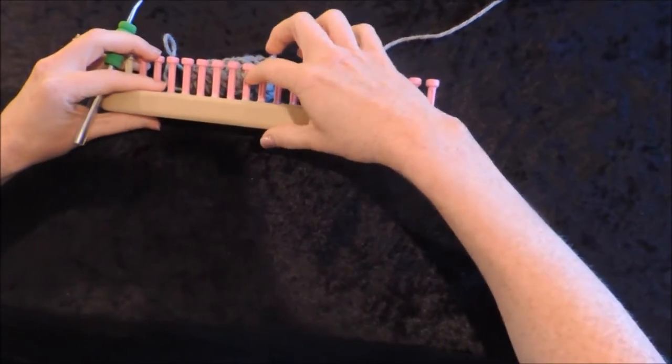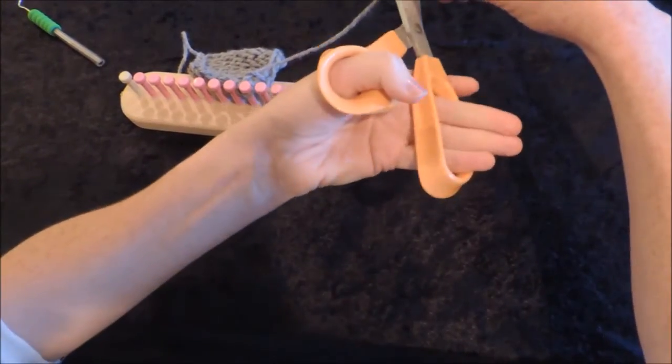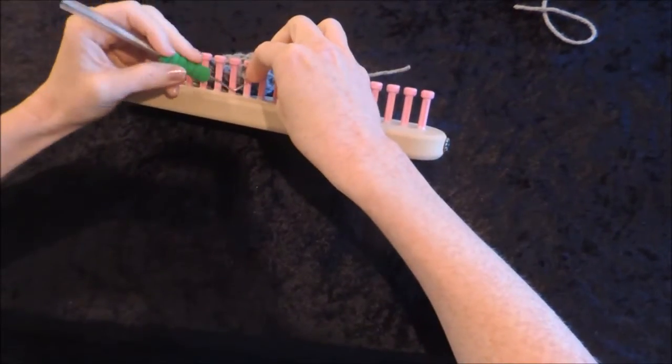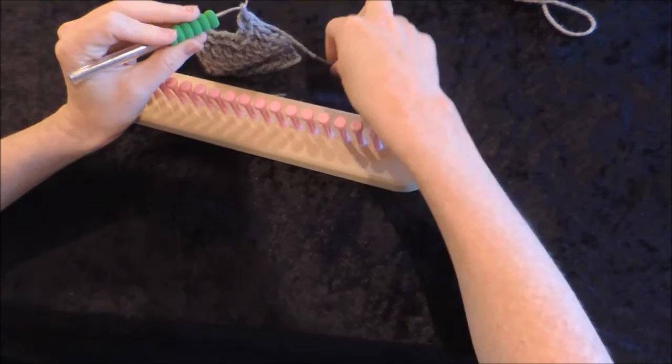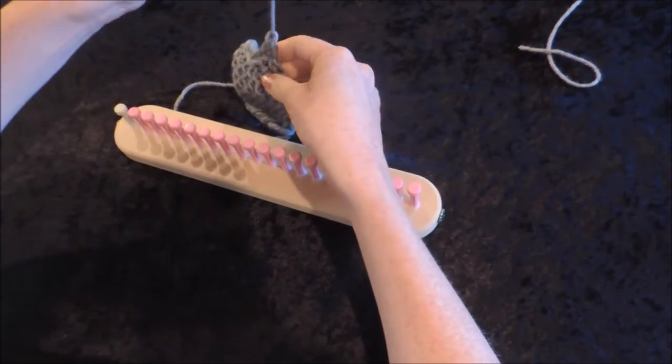So now the only thing on is this one loop. At this point, you get your scissors, and you cut a little tail, because when we pull this off, you're going to keep your pick through it, and then you're just going to pull that tail right through it.